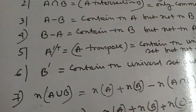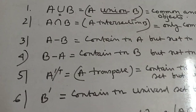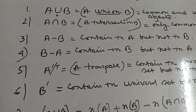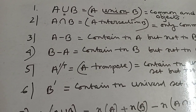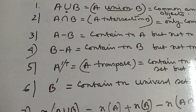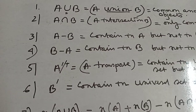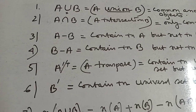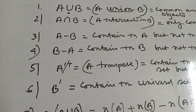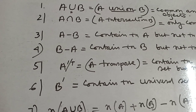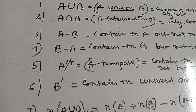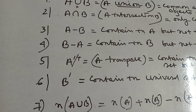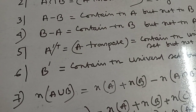A set means a collection satisfying a meaningful condition. For example, the vowels of English alphabets: A = {A, E, I, O, U} — this is a set. But 'the prime minister of a country' is not a well-defined set.